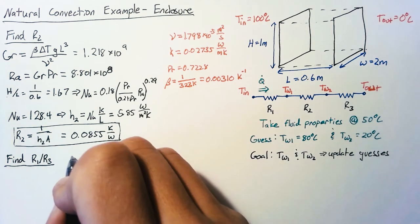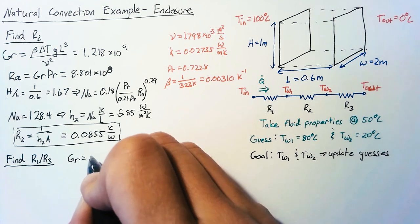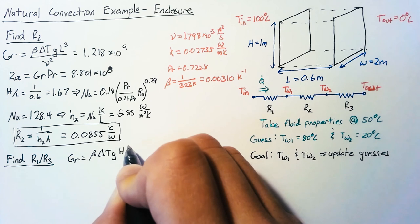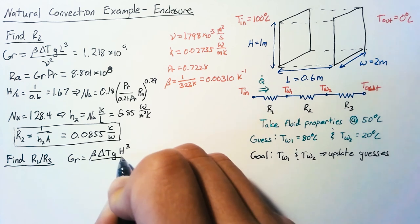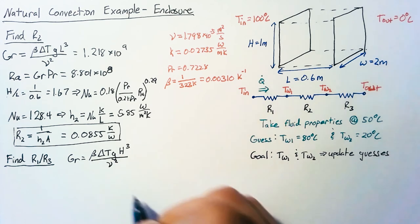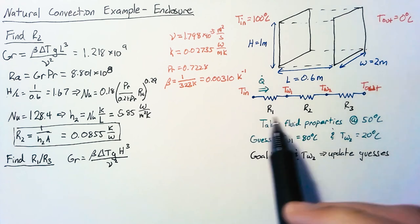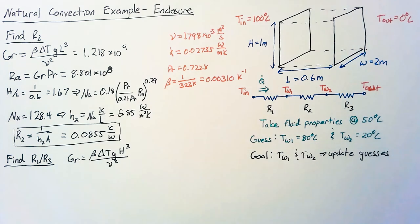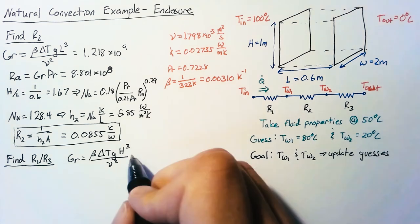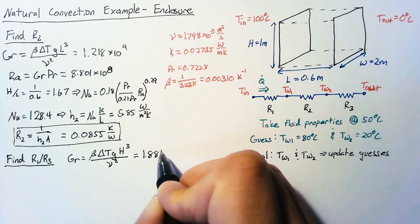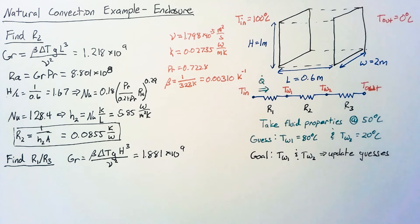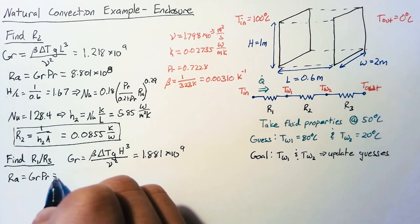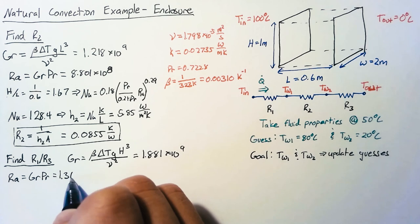Now our Grashof number for this problem is going to be almost identical to the first. The difference is we need to use this H value instead of L and of course because it's a different resistor the delta T will be changing. Now delta T for both of these is going to be exactly 20 degrees. So calculating that we end up with 1.881 times 10 to the ninth and our Rayleigh number which again is just Grashof times Prandtl is going to be 1.360 times 10 to the ninth.